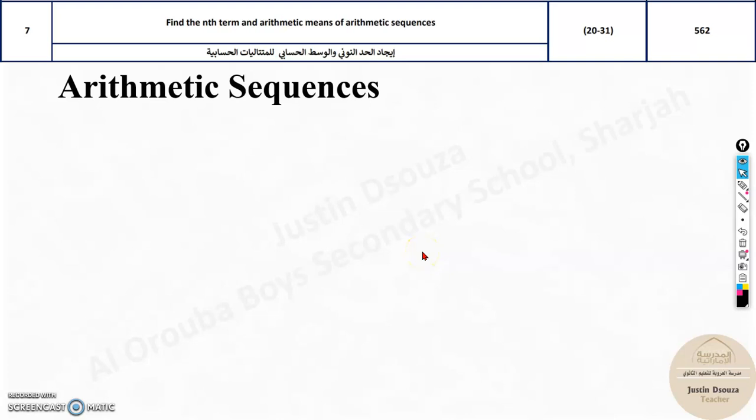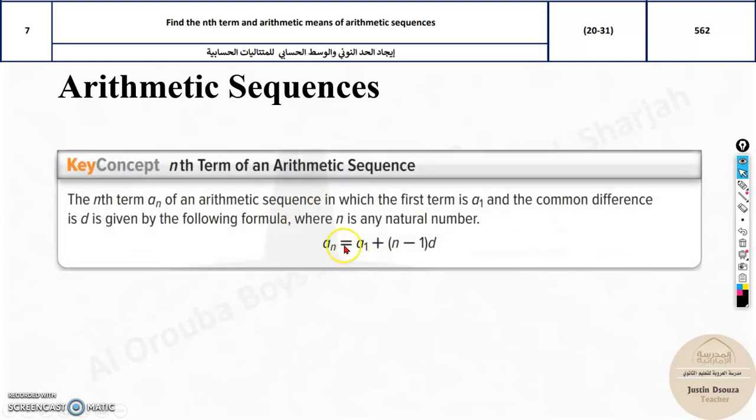In this topic, we are supposed to find the nth term for arithmetic sequences. The nth term means kind of an explicit formula. It's given by a_n equals a_1 plus n minus 1 times d. When you solve for the nth term, that will be the explicit formula. It's not recursive.